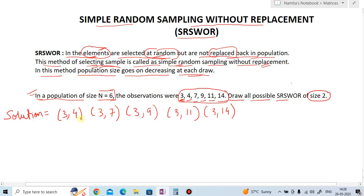Clear? 3,4; 3,7; 3,9; 3,11; and 3,14. Now next observation is 4. Now 4,7. Now we cannot take 3. Why? Because we have already taken 3. Now see, the definition says that it cannot be replaced back in the population. Now for the 4, we cannot take the 3.